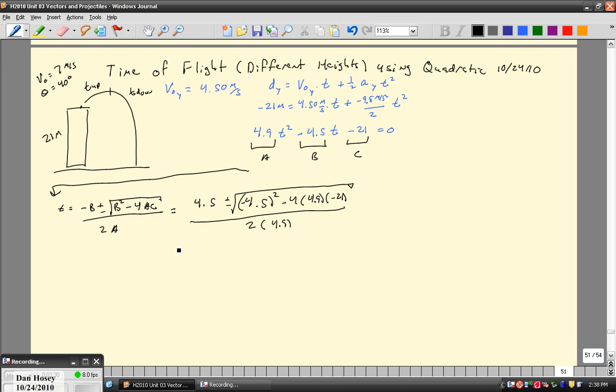Now I'm going to do what I usually do, which is to do this in steps. So 4.5 divided by 2 times 4.9 or 9.8 is going to give me 0.459 plus or minus. Now in the square root, negative 4.5 squared gives you 20.25 plus 411.6. And we're going to take the square root of that, and that is going to be over 9.8.